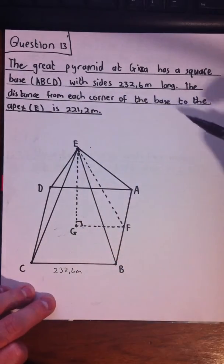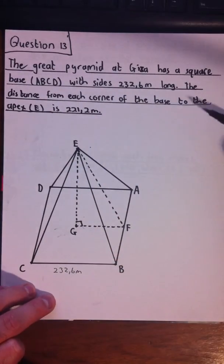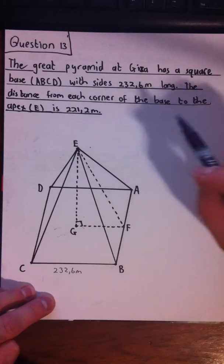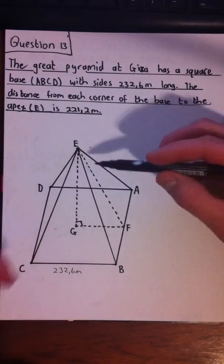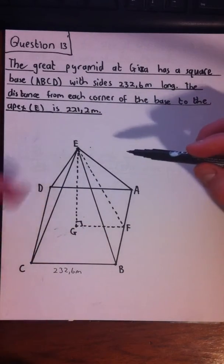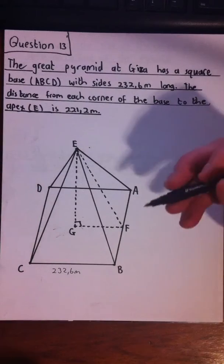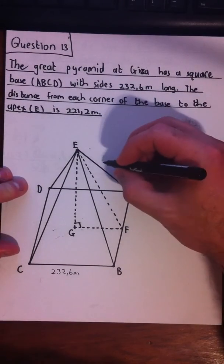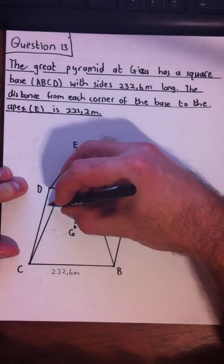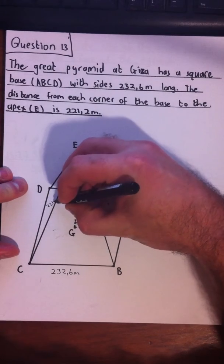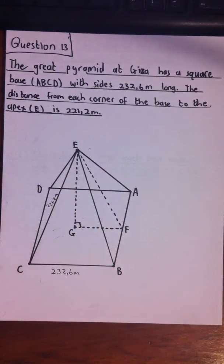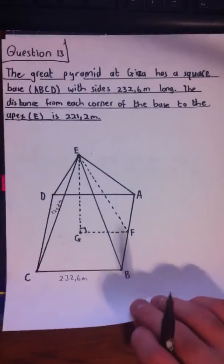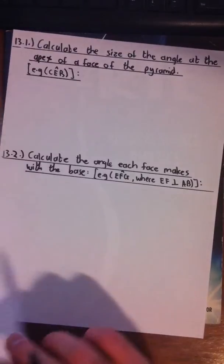The distance from each corner of the base to the apex E is 221.2 meters. So that's the lines BE, AE, CE, and DE — all of them are 221.2 meters. Let's see what questions they have for us.